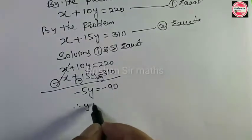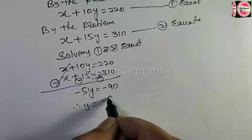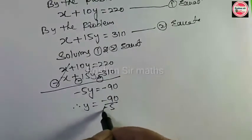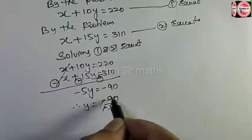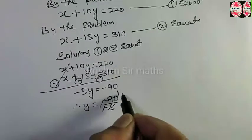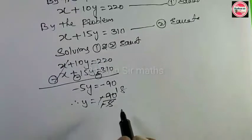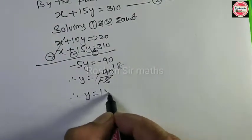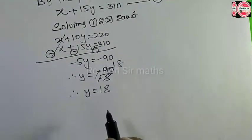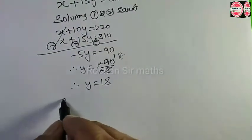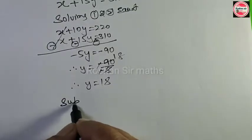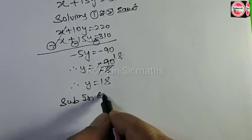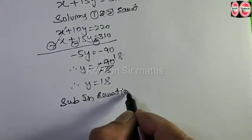Y is equal to minus 90 by minus 5. 5 ones are 5, 5 fives are 40 — y ka answer humare paas aaya 18. Isko hum equation 1 mein substituting karenge.